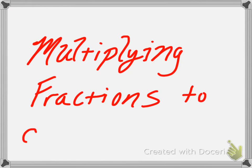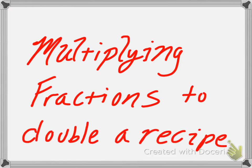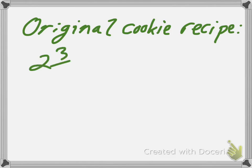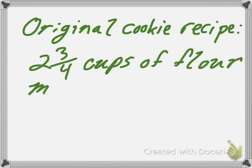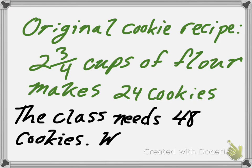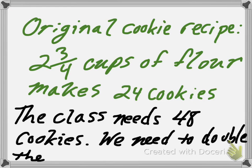Today we're going to multiply fractions to double a recipe. If the original cookie recipe requires 2 and 3 fourths cups of flour, it makes 24 cookies. But the class needs, everybody wants 2 cookies, so we have to double the recipe to make 48 cookies.